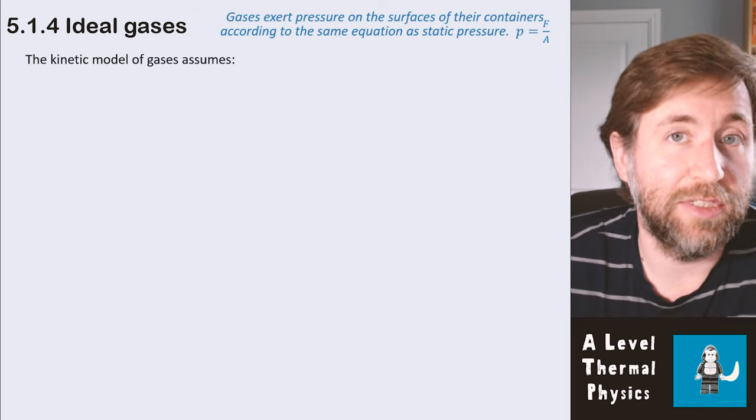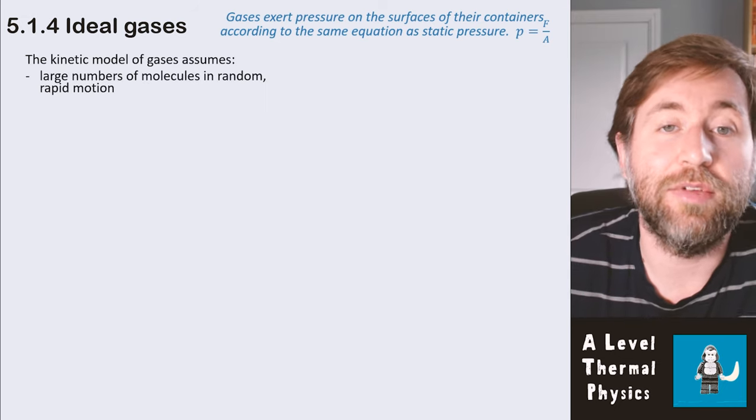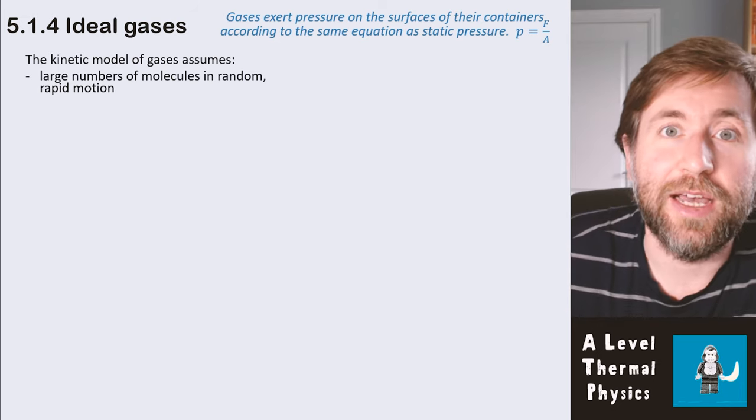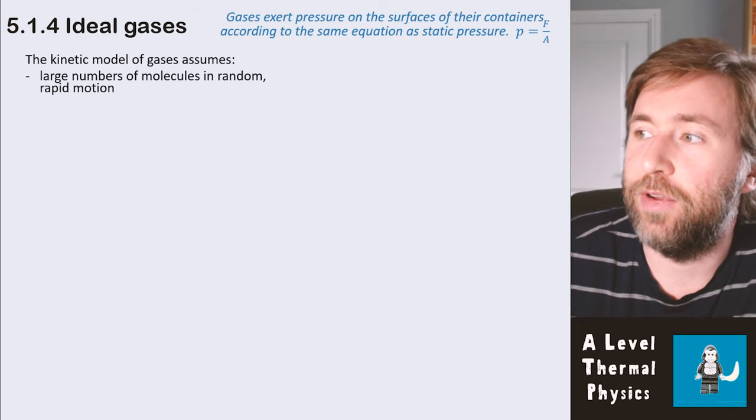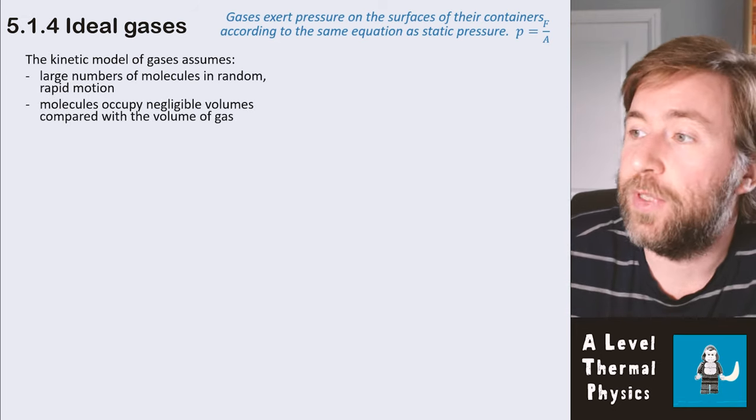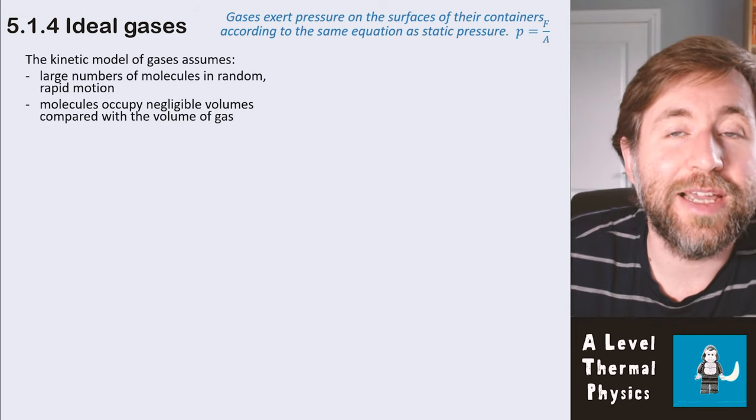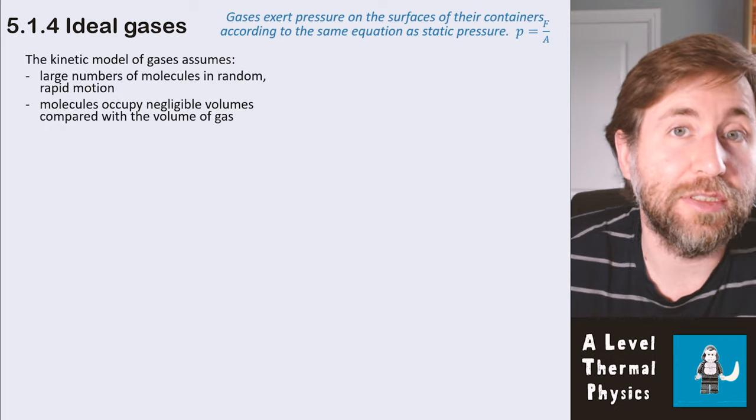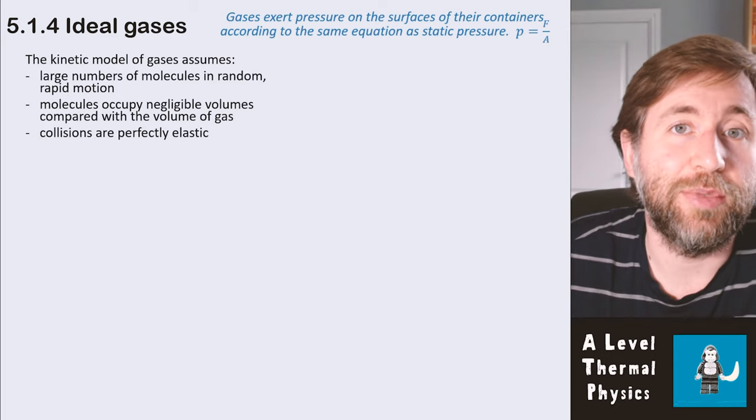The kinetic model of gases, the ideal gas model, assumes that we have a large number of molecules in random and rapid motion. So if you think about the Avogadro constant, we do indeed have a very large number of molecules, and we sometimes refer to this as statistical physics. It also assumes the molecules occupy negligible volumes compared with the volume of the gases, so they can be thought of as points. It also assumes that the collisions are perfectly elastic.